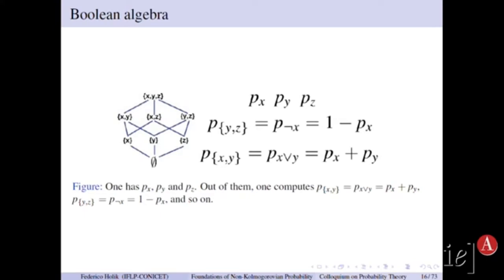And for example, if you know the probabilities of x, y, and zeta, then the probability of the negation, okay, remember that y and zeta is not x, okay? So the probability of this guy here will be given by a definite rule. So Kolmogorov axioms tell you how to compute new probabilities out of others.